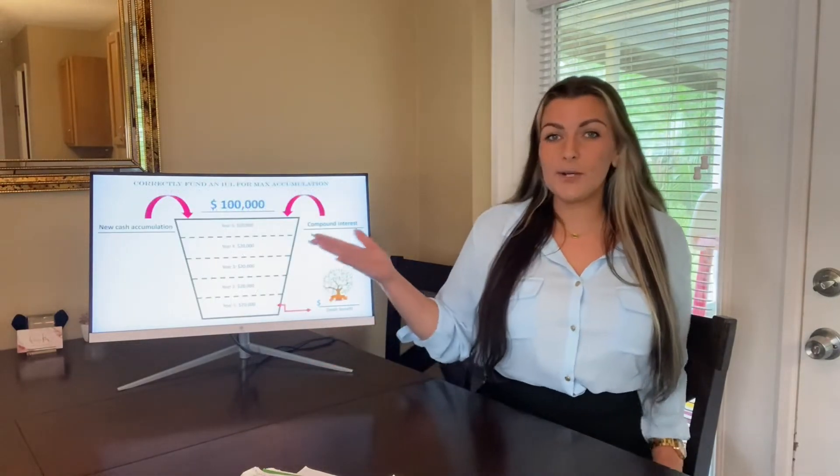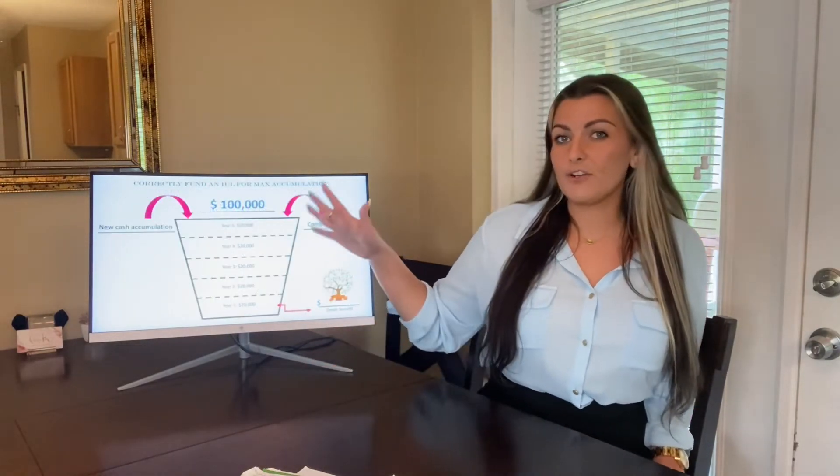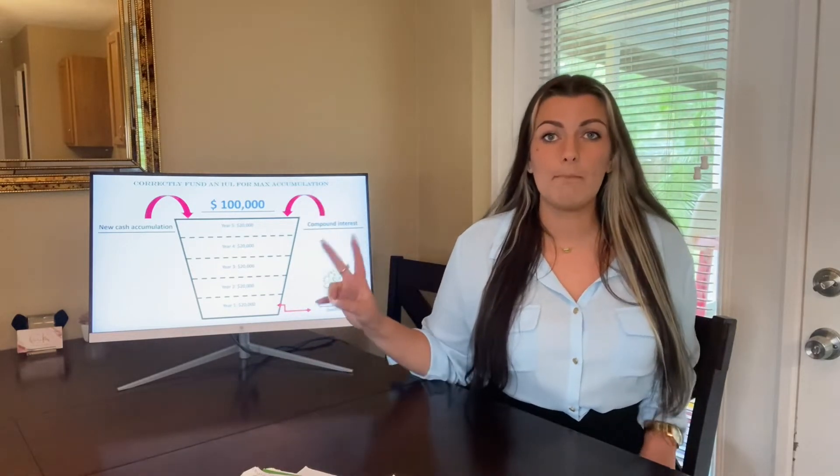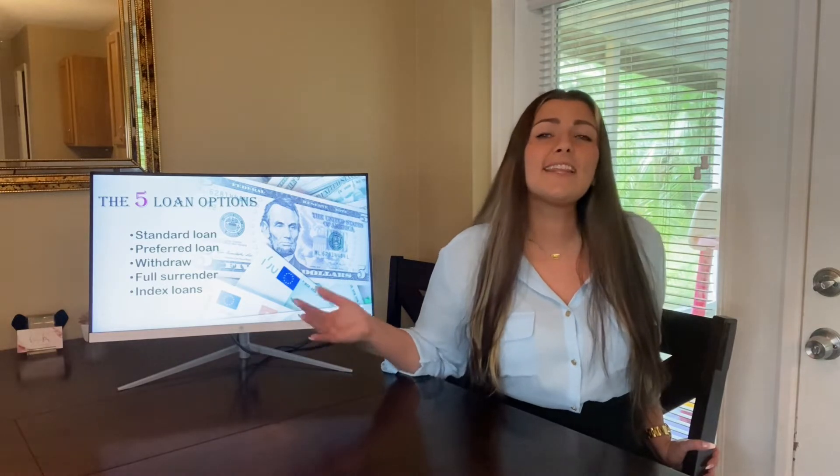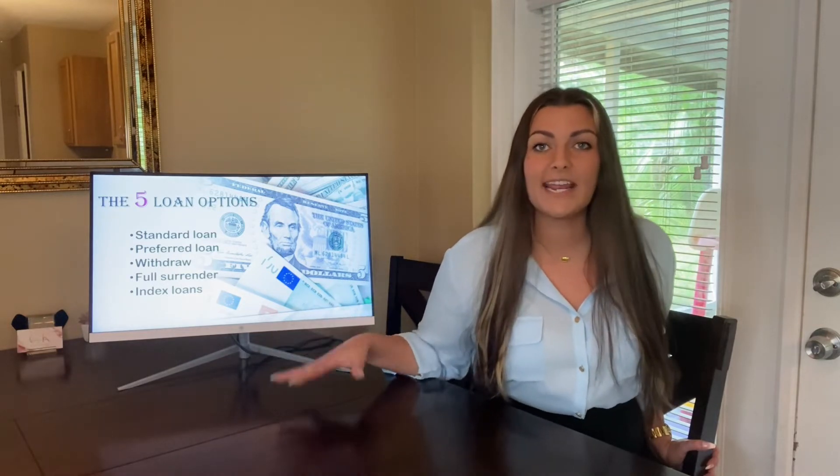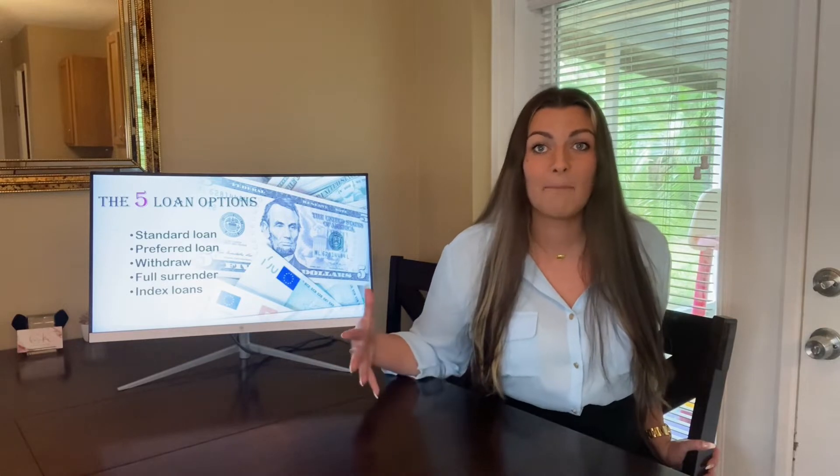We also went over how to fund your policy with $100,000 so that your policy doesn't become a MEC or taxable. Today we are focused on the last step of the infinite banking process — taking the loans on an indexed universal policy and how to create positive arbitrage with your money.